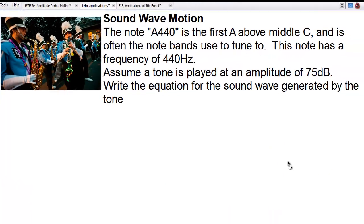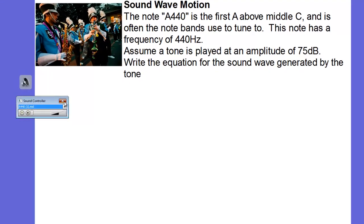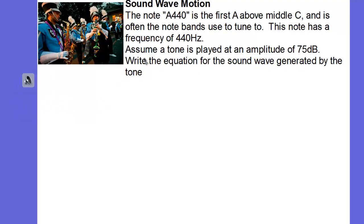Let's move on to talk about sound wave motions. And I'm going to play a note for you, and that note is A440. And it's the first A note above middle C. You can hear it there. Often, that's a tone bands will tune to to make sure all their instruments are in tune. So let's assume a tone is played at an amplitude of 75 dB. And by the way, that A440, the 440 actually stands for the frequency of the sine wave that's generated by that tone. Write the equation for the sound wave generated by the tone.